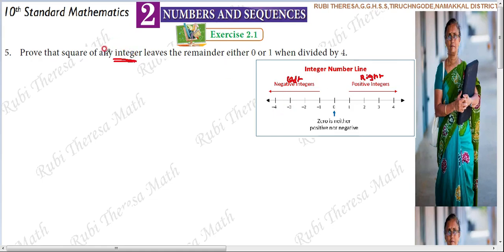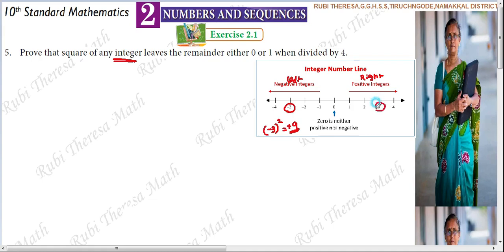Let's see what happens when we square. For example, if we select the integer minus 3 and square it, minus 3 squared gives us plus 9. Minus into minus becomes plus, 3 into 3 becomes 9. So we get plus 9. Similarly, if you take plus 3 and square it, you also get plus 9.